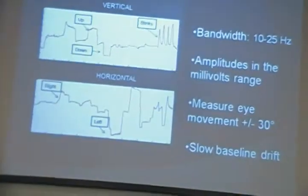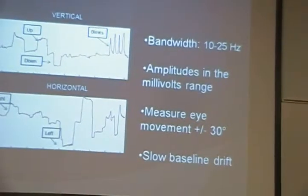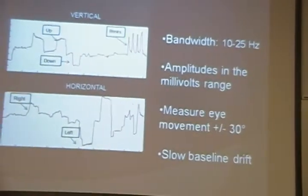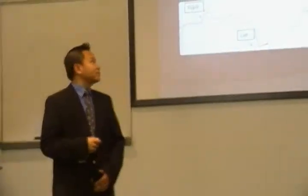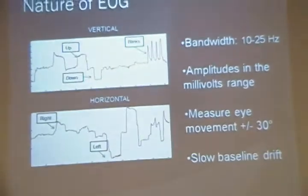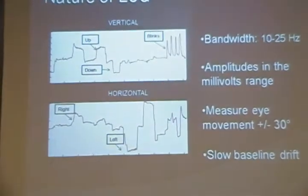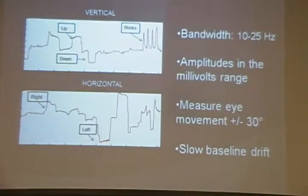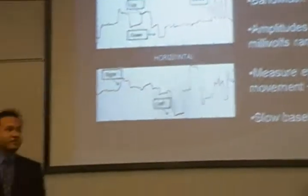On this next slide, we see what the EOG signal looks like. As the user changes direction of their eyes, the electrical dipole also changes, which changes the amplitude of the EOG signal. On the vertical channel, when the user looks up the amplitude increases, and when the user looks down the amplitude decreases. Similarly, on the horizontal channel, when the user looks to the right the amplitude increases, and when the user looks to the left the amplitude decreases.